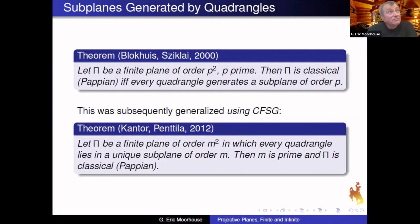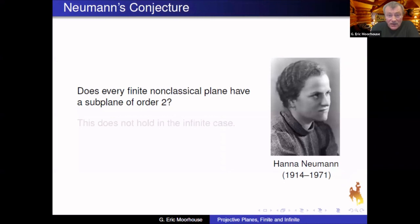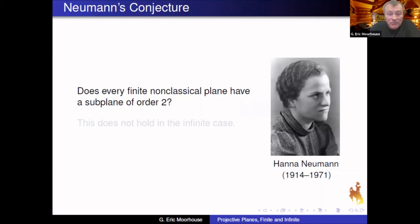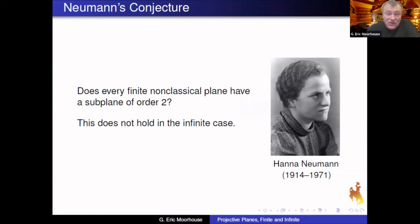Here's another question about subplanes: if you have a non-classical plane, is there necessarily at least one subplane of order two? This has been known as Neumann's conjecture after Hannah Neumann, although she apparently disputed ever having conjectured this. This does not hold in the infinite case — there's a clear distinction. I tend to believe that finite non-classical planes must have a subplane of order two, but it seems very hard to imagine proving.